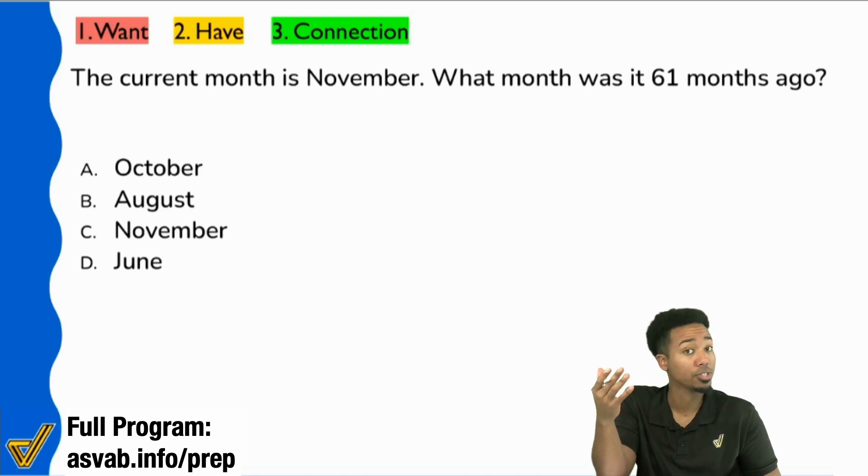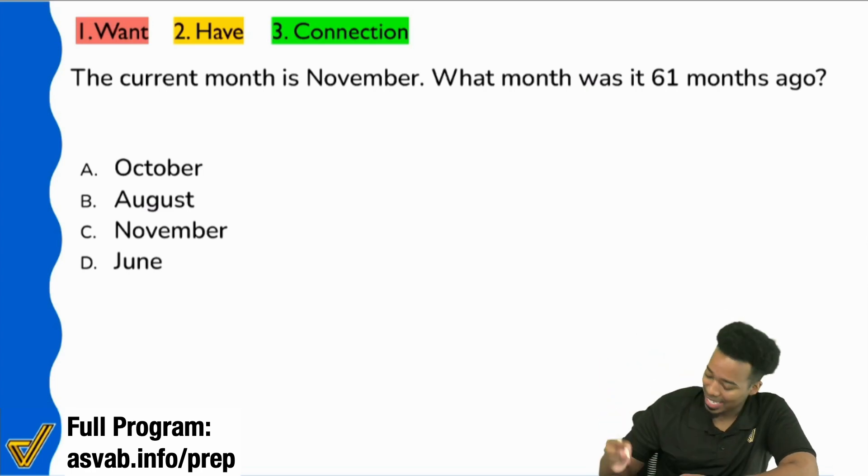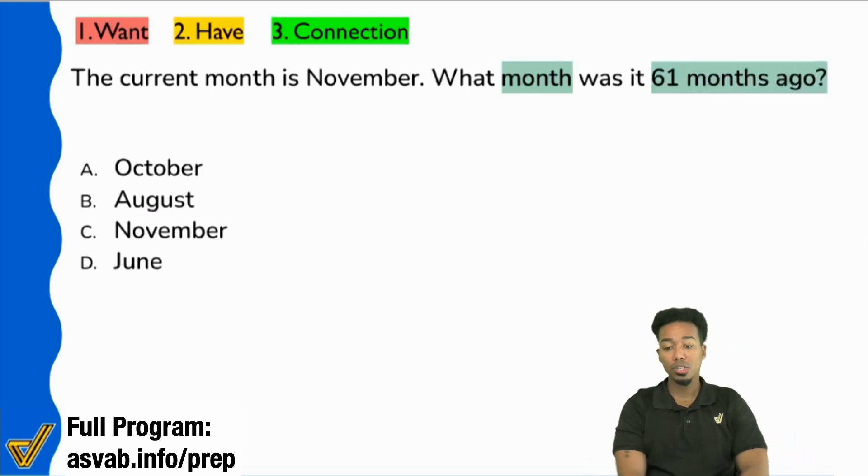So Jesse, to be a little more specific, not just any month, right? We're not just going to say January or February or March or April. They're asking, hey, what month was it 61 months ago? So the month that it was 61 months ago. So everybody, if we're saying 61 months ago, are we looking forward 61 months or backwards 61 months? Which way are we going? We're going 61 months backwards.